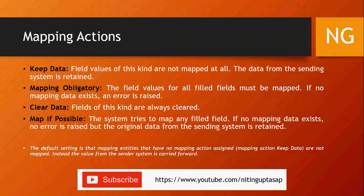Map If Possible is a kind of optional action. The system tries to map the field; if no mapping exists it goes to error, but the original data from the sending system is retained. Those are the four mapping actions, and I'll show you on screen how it looks. It can be set differently per system — for one ECC system you can have company code as Keep Data, for another as Mapping Obligatory.